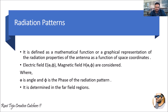Since what we are radiating through the antennas are electromagnetic waves, it will have an electric field as well as a magnetic field. The electric field is taken as E(θ, φ) and the magnetic field is H(θ, φ), where θ is the angle of propagation of the radiation through the antenna and φ is the phase in which the radiation is moving. These properties are majorly determined in the far-field regions.